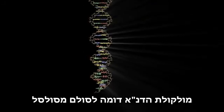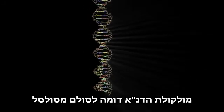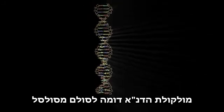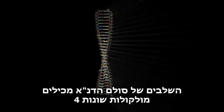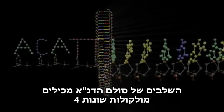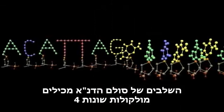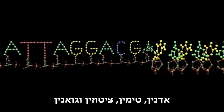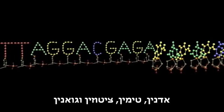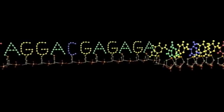The DNA molecule itself resembles a sort of twisted ladder. The steps of the DNA ladder consist of four different molecules: adenine, thymine, cytosine, and guanine.